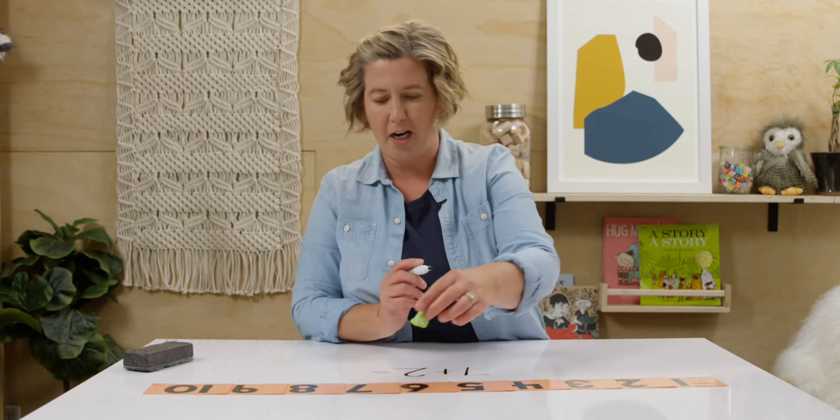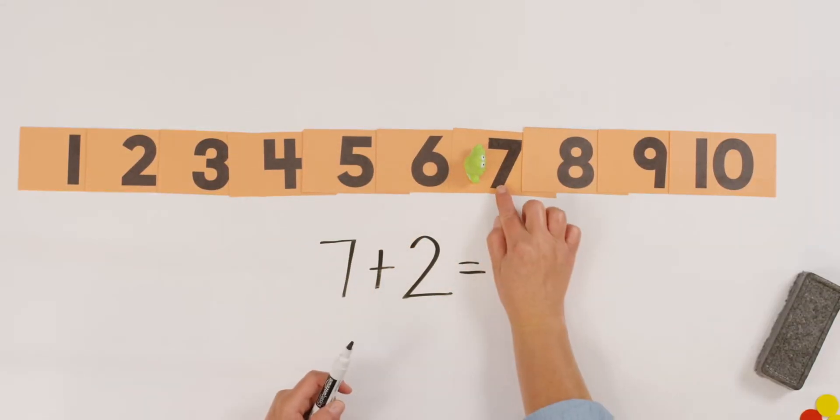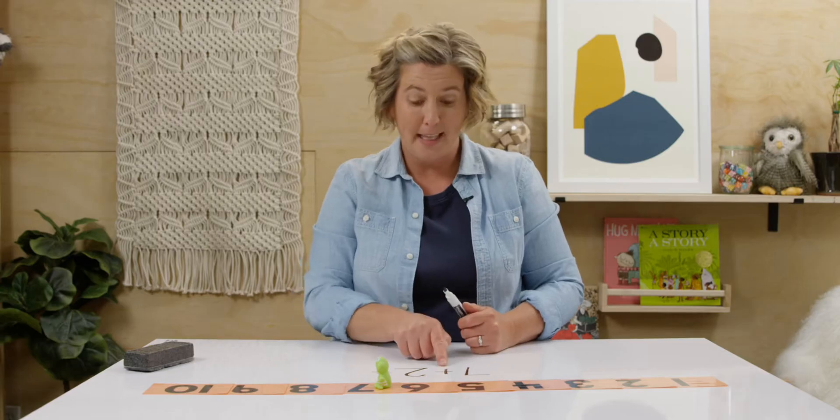So let's put our counter. I'm going to say froggy because that's what I have. Let's put our froggy on seven and let's hop forward two more. How do you know we're hopping forward and not backwards? The plus sign means to move forward or add more. So let's do that.